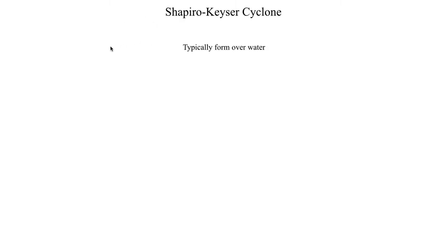One thing that we should note right away about Shapiro-Kaiser cyclones is these typically do not form over land — they usually form over water. They typically form in a marine environment where there is relatively warm and moist water present in the vicinity of the cyclone.